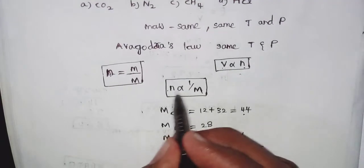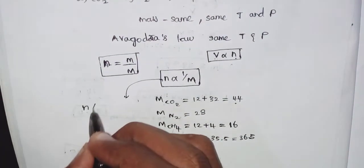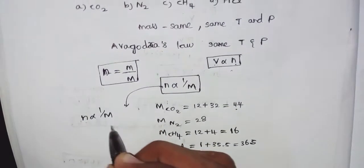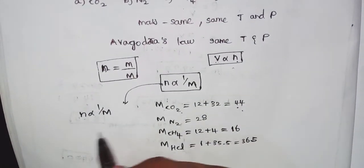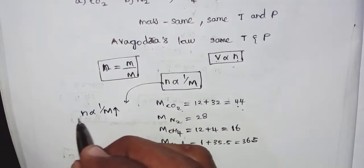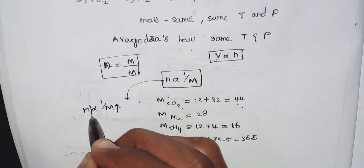The molar mass of carbon dioxide is 44. If the molar mass of carbon dioxide is highest, the number of moles of carbon dioxide is least.